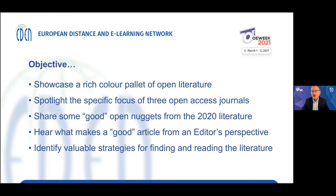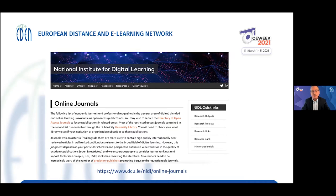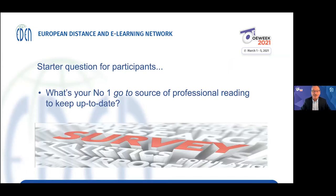There is a wealth of literature in the area. A publication from 2016 in AJET, the Australasian Journal of Education Technology, identified over 270 open access journals in the field — and there are more, with a bias towards English-speaking journals. Our own National Institute keeps a pretty comprehensive list of these journals; we try to curate the ones that we think would be best for reading. In the chat box, let us know what your number one top source of good reading is and what you turn to to keep yourself up to date.